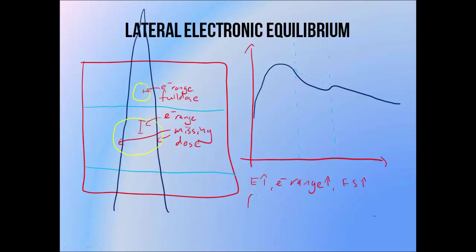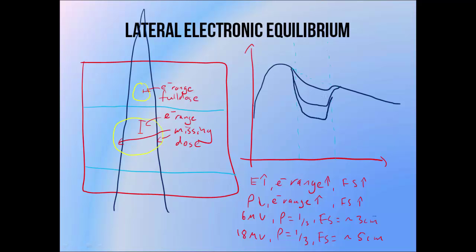As a rough guide, a 6MV beam passing through lung, which has a density of roughly a third that of water, needs a field size with a radius of about 3cm in order to provide full equilibrium, and an 18MV beam passing through lung needs a field size of about 5cm. As beam energy increases or density decreases below the point required for equilibrium, this drop in dose is more and more significant.